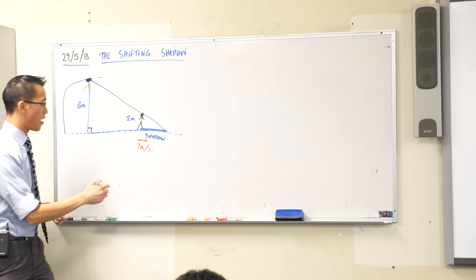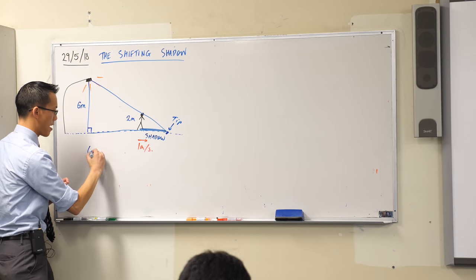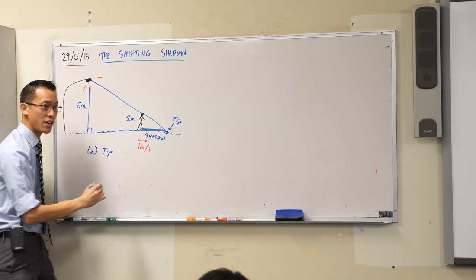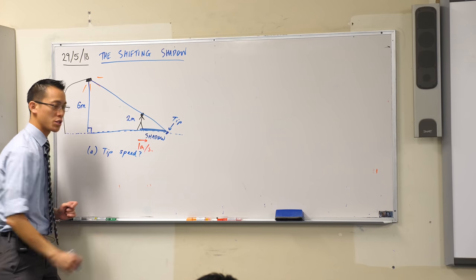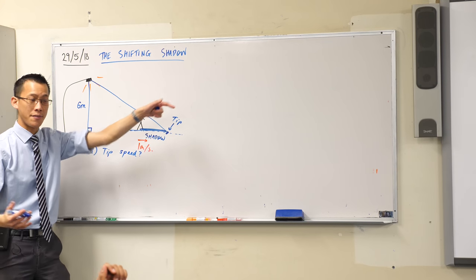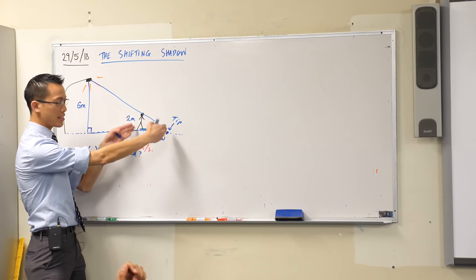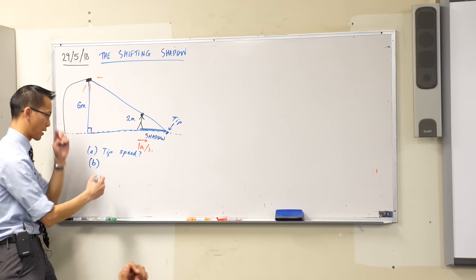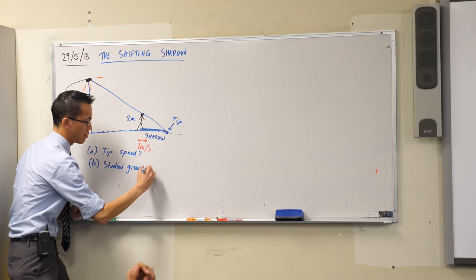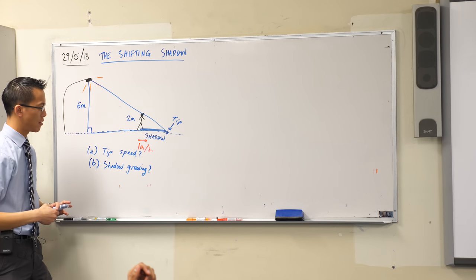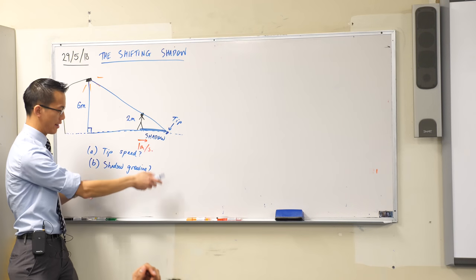Part A is, how fast is the tip of the shadow? There it is. I'm even going to label it for you. Part A is, how fast is the tip of the shadow moving? So I guess we could say, what is the tip's speed? It's going that way. How fast? Part B is, the shadow itself is getting longer and longer and longer. Okay? So at what speed is the shadow growing? How fast is that tip moving? How fast is the shadow getting longer and longer and longer?